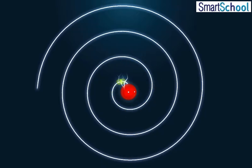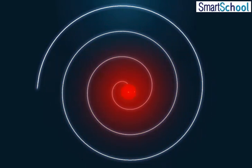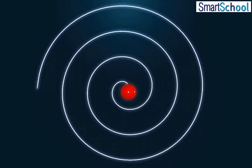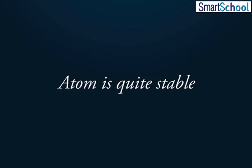And ultimately, the electron should fall into the nucleus, which means the atom should collapse. But this actually does not happen, and the atom is quite stable.